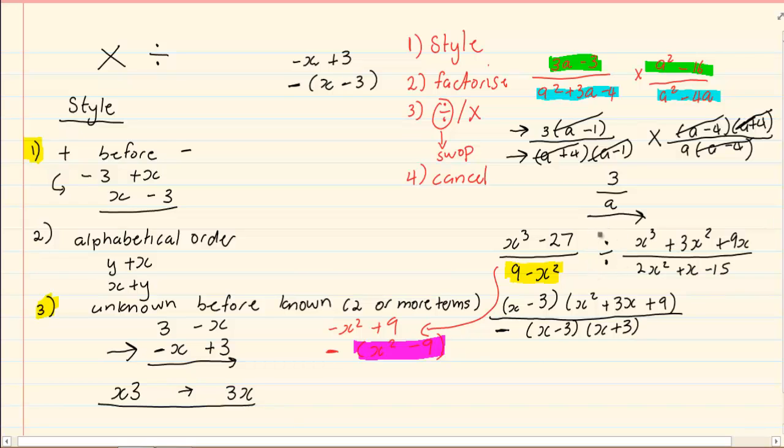Then the division, we are going to change it to multiplication. But as soon as we change it to multiplication, this denominator moves on top. So I have 2x squared plus x minus 15 over x cubed plus 3x squared plus 9x.